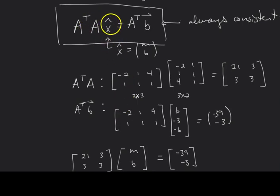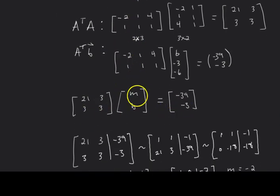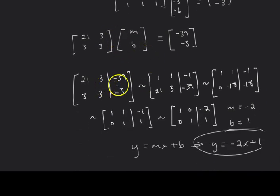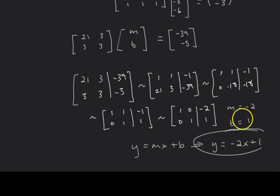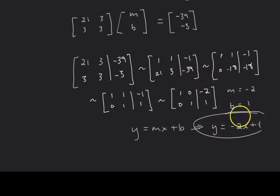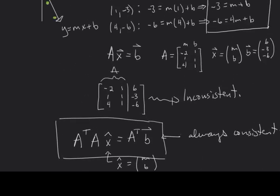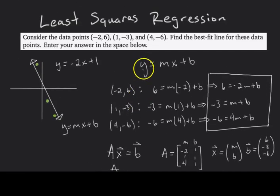You solve the system — matrix times x̂ equals a vector — put it in an augmented matrix, row reduce, and get your least squares solution. In this case m = -2 and b = 1, which we plug into y = mx + b to get our final answer. I hope that clears things up, and I'll see you for some more example problems.